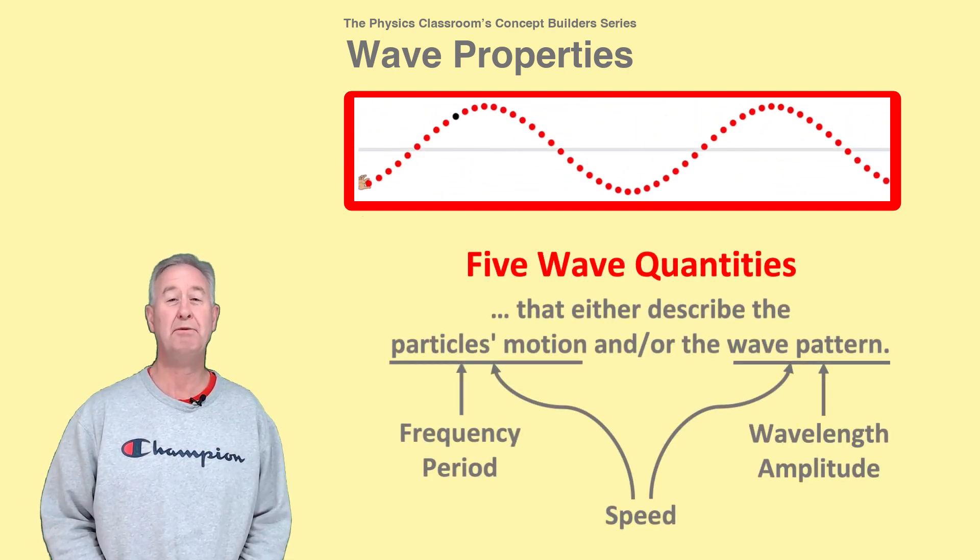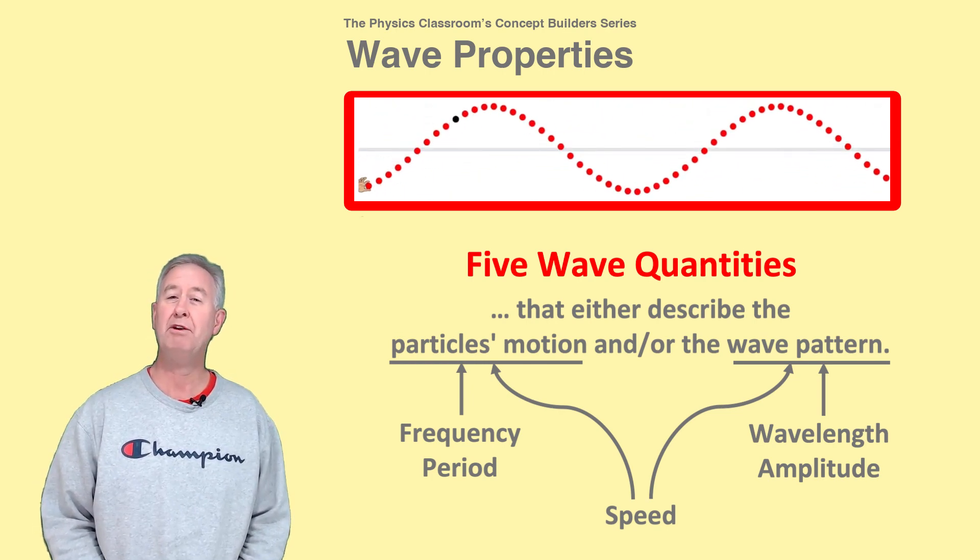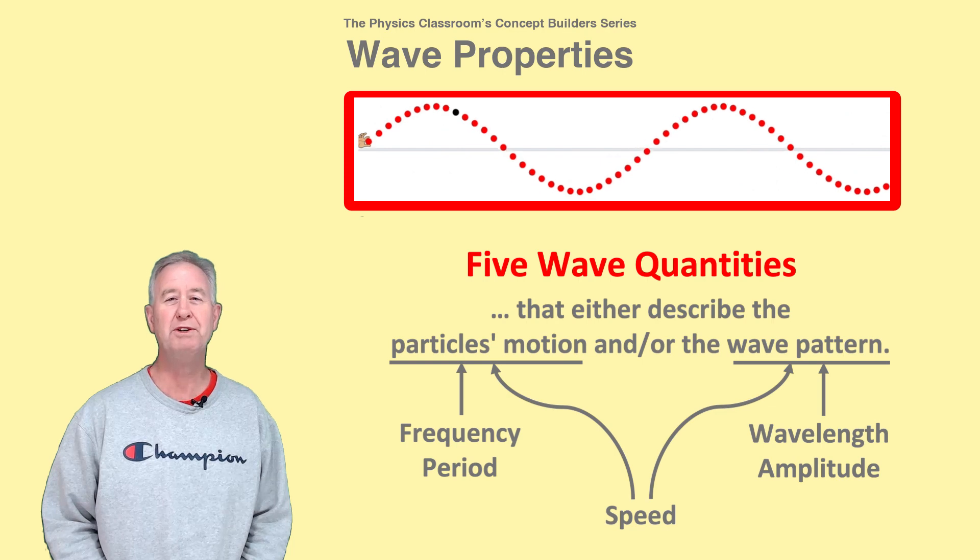Five quantities—frequency, period, wavelength and amplitude, and speed—describe either the particle's motion or the resulting wave pattern.